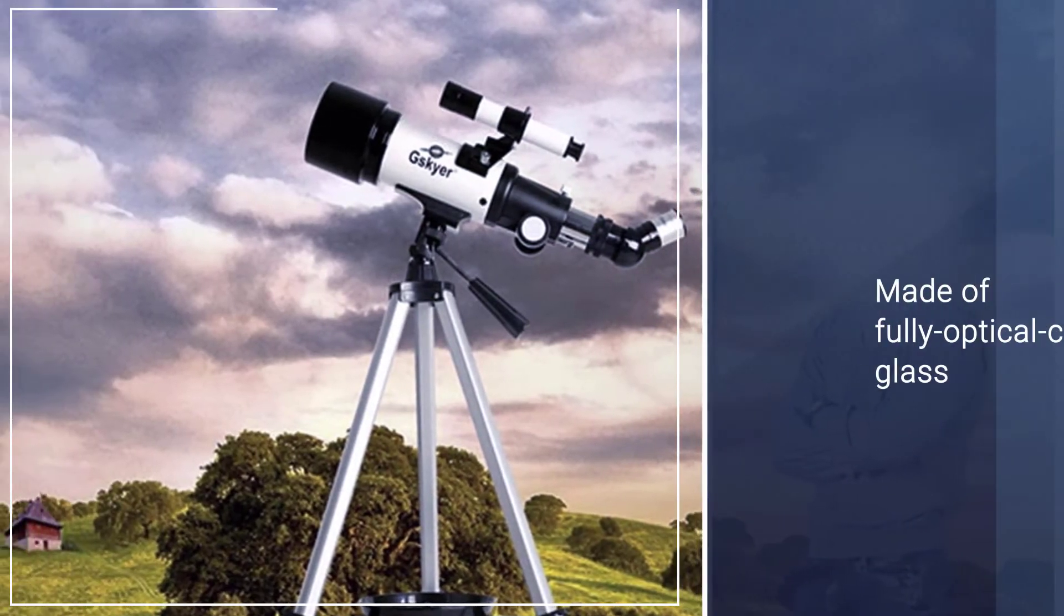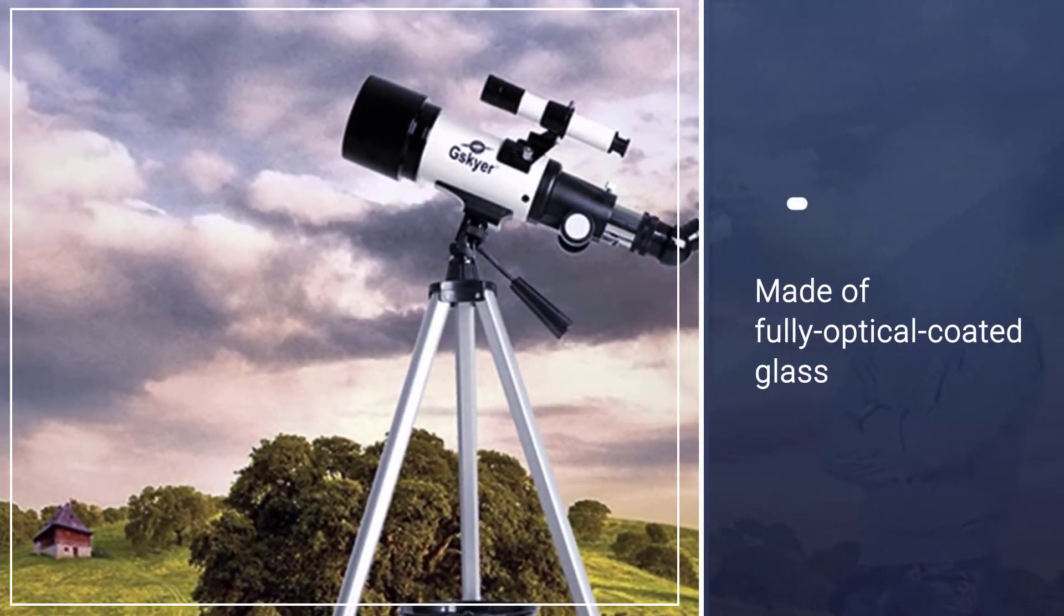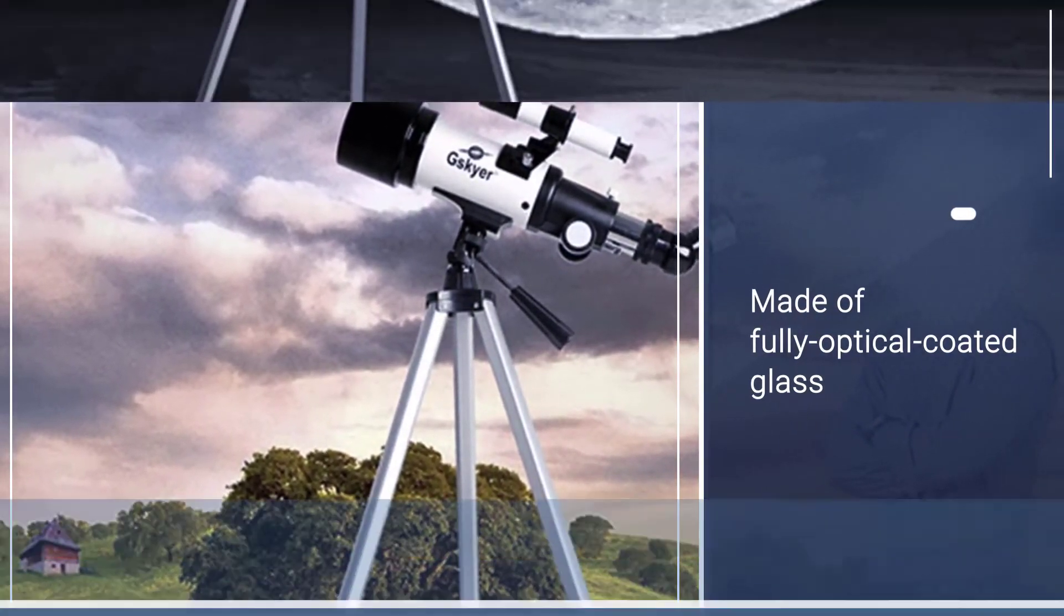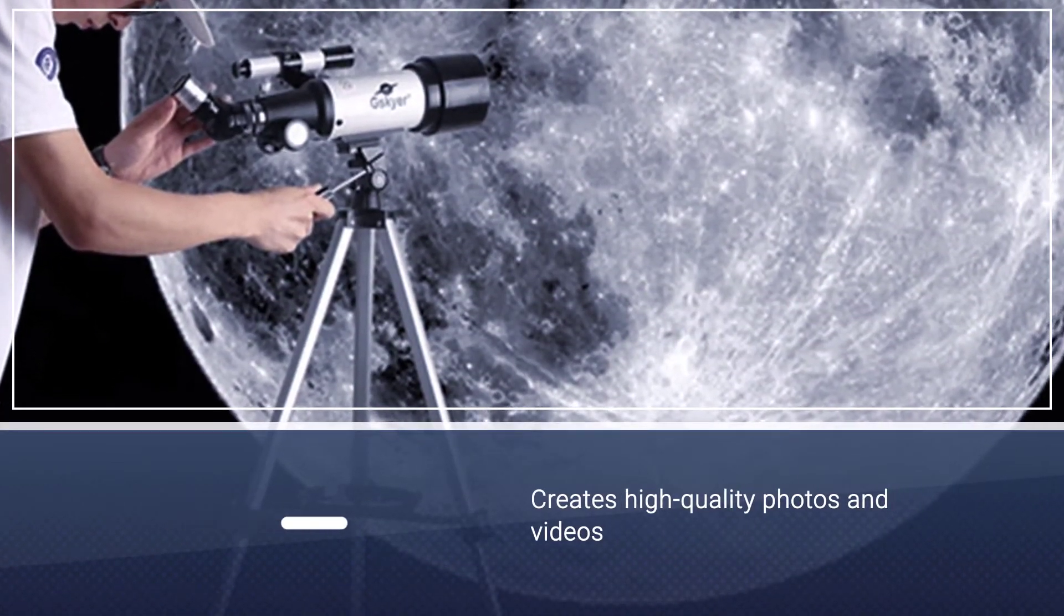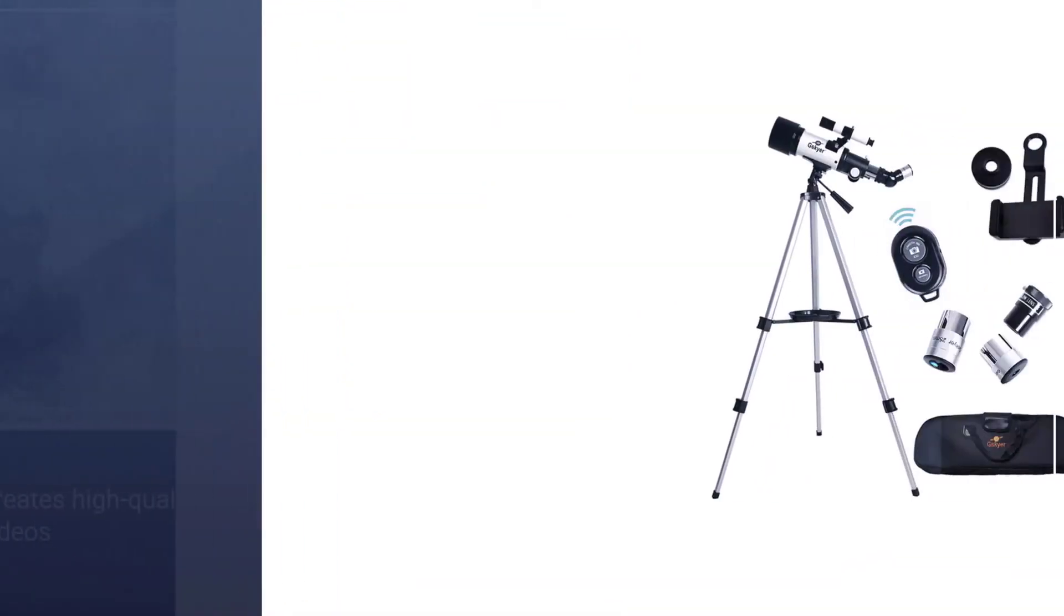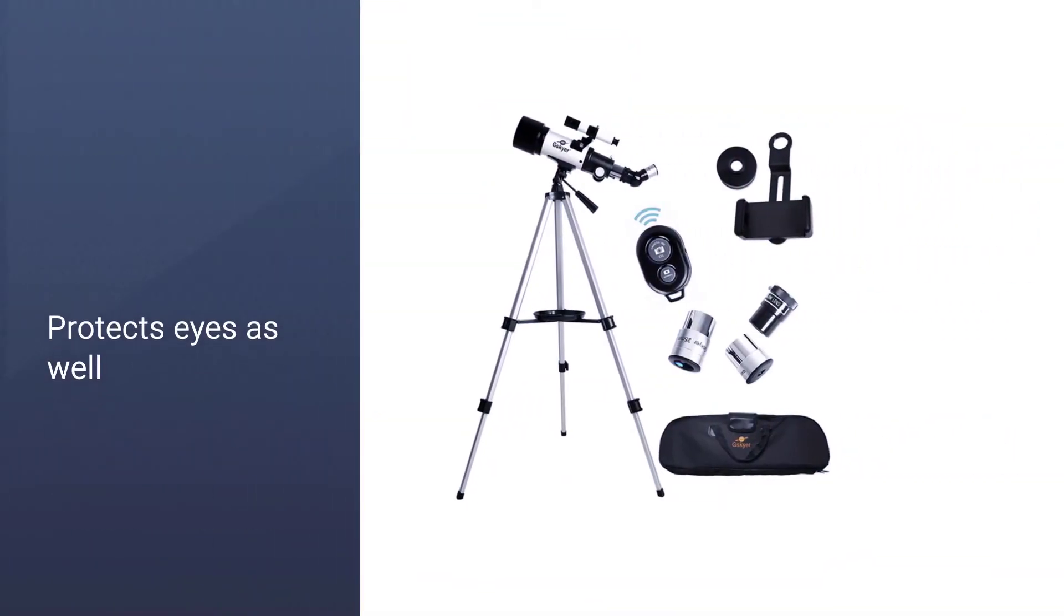It will help you learn more about planets, moon and stars. This Skyer telescope has a 70 millimeters aperture and a 5.7 focal ratio. The lens is made of fully optical coated glass that creates high quality photos and videos.